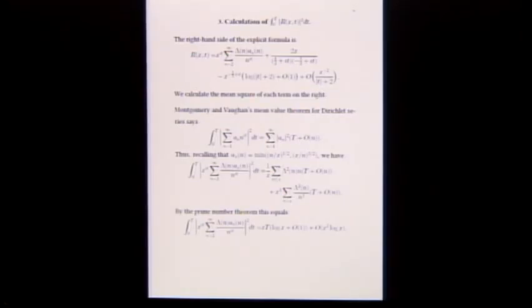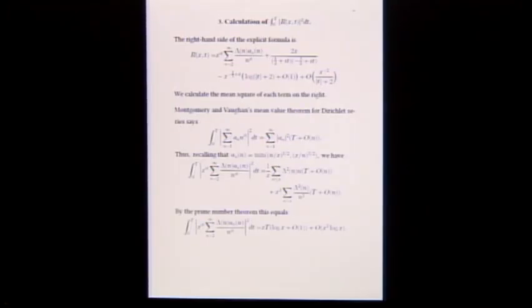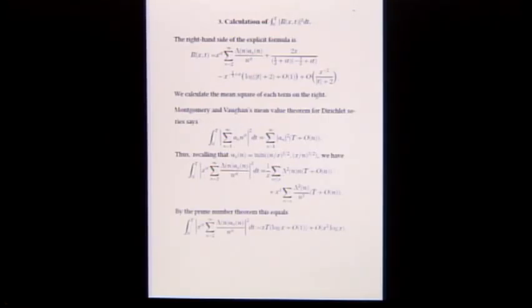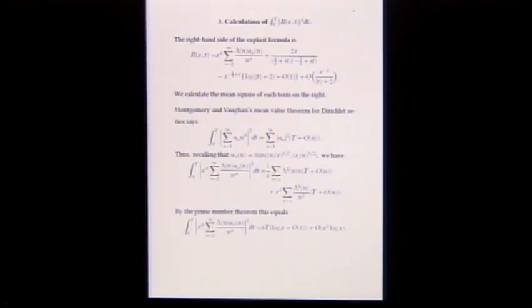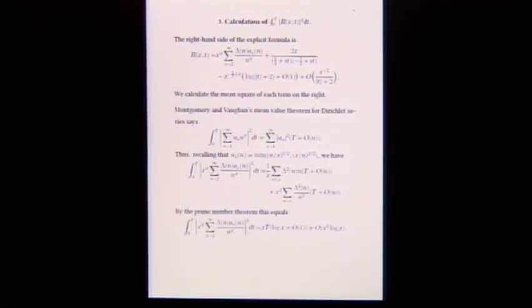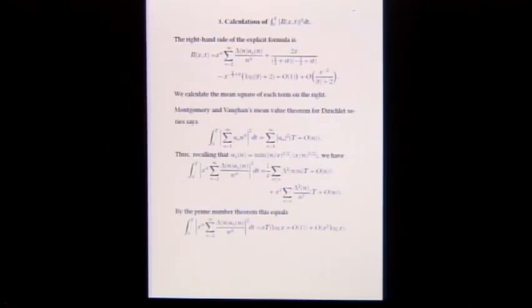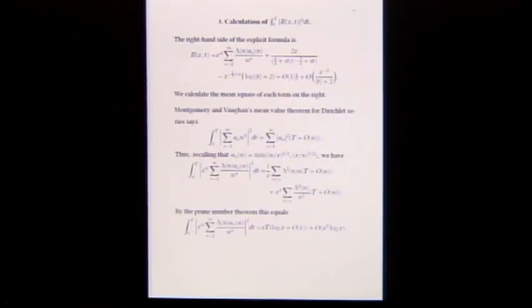For the mean square of the Dirichlet series, we use the Montgomery-Vaughan mean value theorem. Put in what the coefficients are — the a_x(n) coefficients are lambda n times a sub x. The coefficients change form when n is less than x or bigger than x, so we split the series into two pieces and get lambda squares in both, with n over x and x cubed over n cubed coming from (a sub x of n) squared.